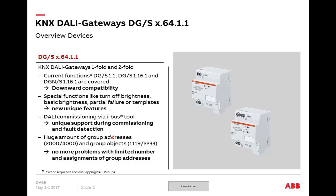The new gateways are based on completely new hardware with a new processor. We now have a huge amount of possible group addresses — 2,000 for the one-fold and 4,000 for the two-fold — and over 1,000 and over 2,000 group objects per component respectively. If you enable a lot of functions you get more and more group objects and group addresses. Some of you might remember the DGS-11 had limitations in group objects and communication addresses — that is not existing here anymore.